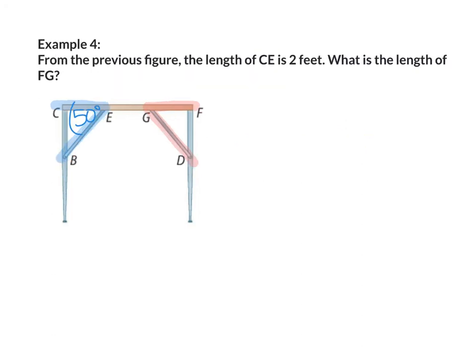Example number 4: from the previous figure, the length of CE is 2 feet. What is the length of FG? Since the triangles are congruent, FG is also 2 feet.